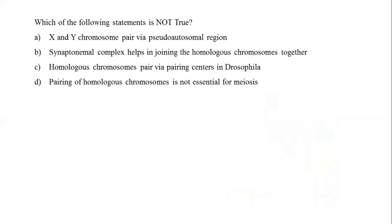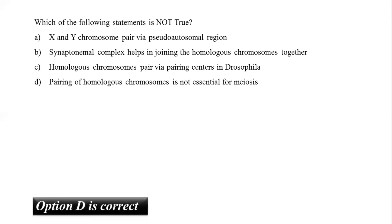The next question asks which statement is not true. Options include: X and Y chromosomes pair via pseudo-autosomal regions; synaptonemal complex helps join homologous chromosomes; homologous chromosomes pair via pairing centers in Drosophila; and pairing of homologous chromosomes is not essential for meiosis. Pairing of homologous chromosomes is an essential feature of meiosis, promoting high-level recombination and ensuring segregation of homologs. Therefore, option D — that pairing is not essential — is not true. The correct answer is option D.